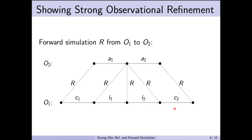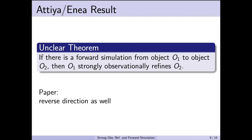I2 and C2 have a similar pattern, but C2 is a non-stuttering step with the analogous abstract step A2. Another result that Atia and Enea claim is that whenever there is a forward simulation from a concrete object O1 to an abstract object O2, then O1 strongly observationally refines O2. The paper also provides a result in the other direction, so they claim that forward simulation is both necessary and sufficient to establish strong observational refinement.